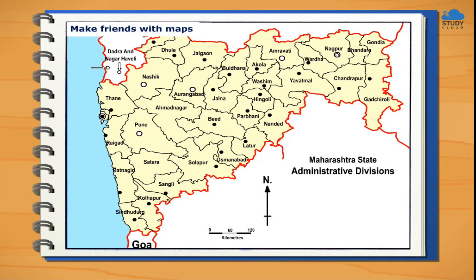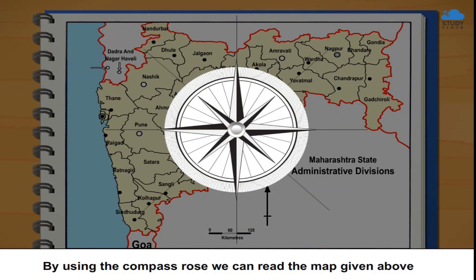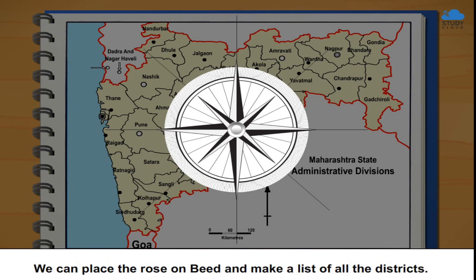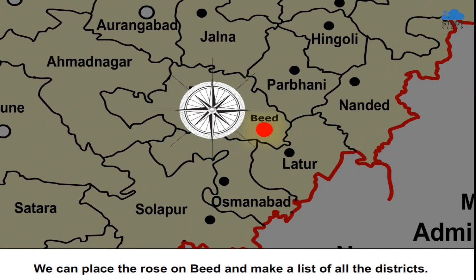Make friends with maps. By using the compass rose, we can read the map given above. We can place the rose on Beed and make a list of all the districts.